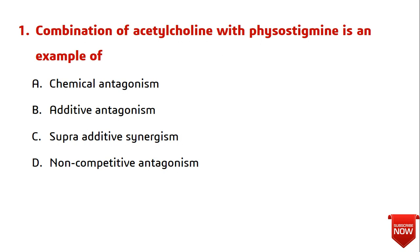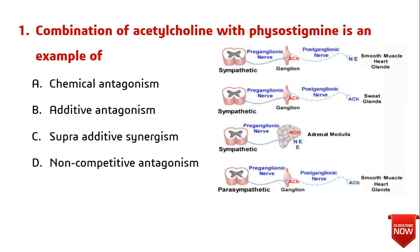Question number one: the combination of acetylcholine with physostigmine is an example of — chemical antagonism, additive antagonism, supra additive synergism, or non-competitive antagonism? Acetylcholine is a neurotransmitter in the pre-ganglionic sympathetic and parasympathetic neurons. Physostigmine is an alkaloid — a parasympathomimetic reversible cholinesterase inhibitor. When given in combination, physostigmine inhibits the acetylcholinesterase enzyme, which is responsible for the metabolism of acetylcholine, so more acetylcholine is observed.